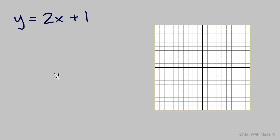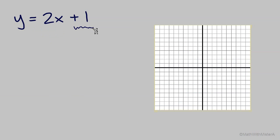When we need to graph an equation that is solved for y, we can use what we know about the slope and the y-intercept to make a very quick graph of the equation. I like to start with the y-intercept, which is the constant, the number term in the equation. It's positive 1, so we have our y-intercept here at positive 1 on the y-axis.